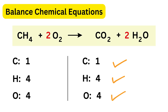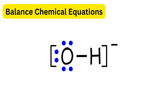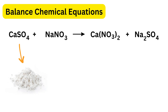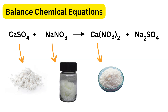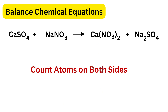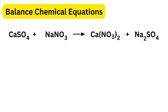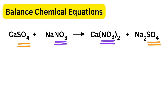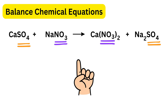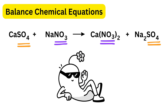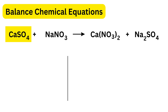Now a new type of problem involving polyatomic ions. The unbalanced equation is calcium sulfate plus sodium nitrate gives calcium nitrate plus sodium sulfate. Instead of splitting everything apart, we notice that the same groups SO₄ and NO₃ appear on both sides. These are called polyatomic ions — they stay together like a team, so we count them as one unit. On the left, calcium sulfate has one calcium and one sulfate; sodium nitrate has one sodium and one nitrate.